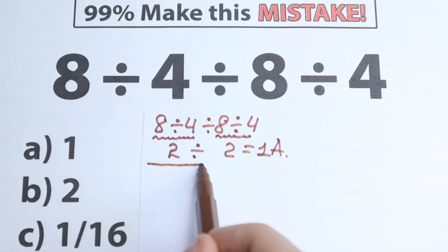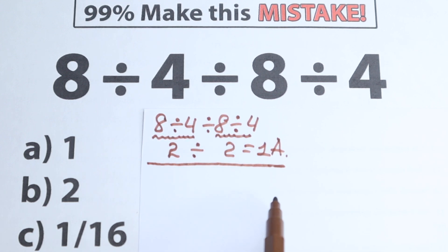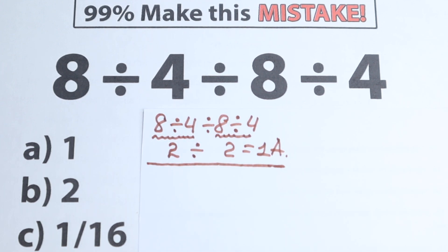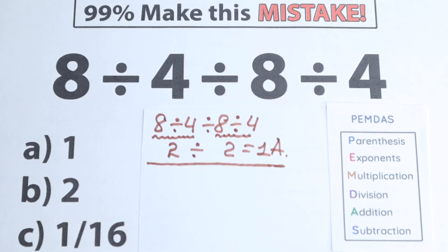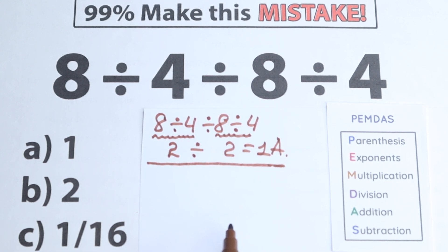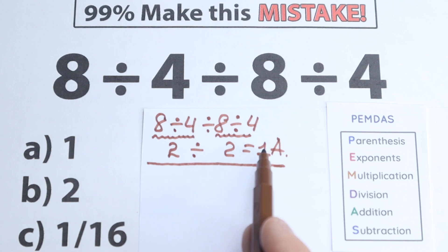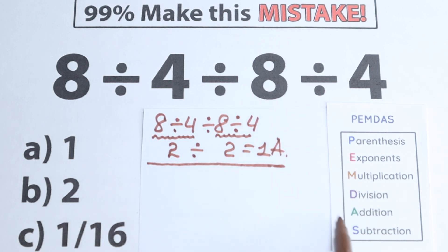I don't want to say yet whether that's correct or incorrect — I want to show you another solution. Then we will compare both and choose the one that is absolutely correct. Right here we jumped from left to right; I'm not sure if that's correct, so let's look at the correct order of operations. Whatever order we select will create a different answer, so let's solve it according to PEMDAS.